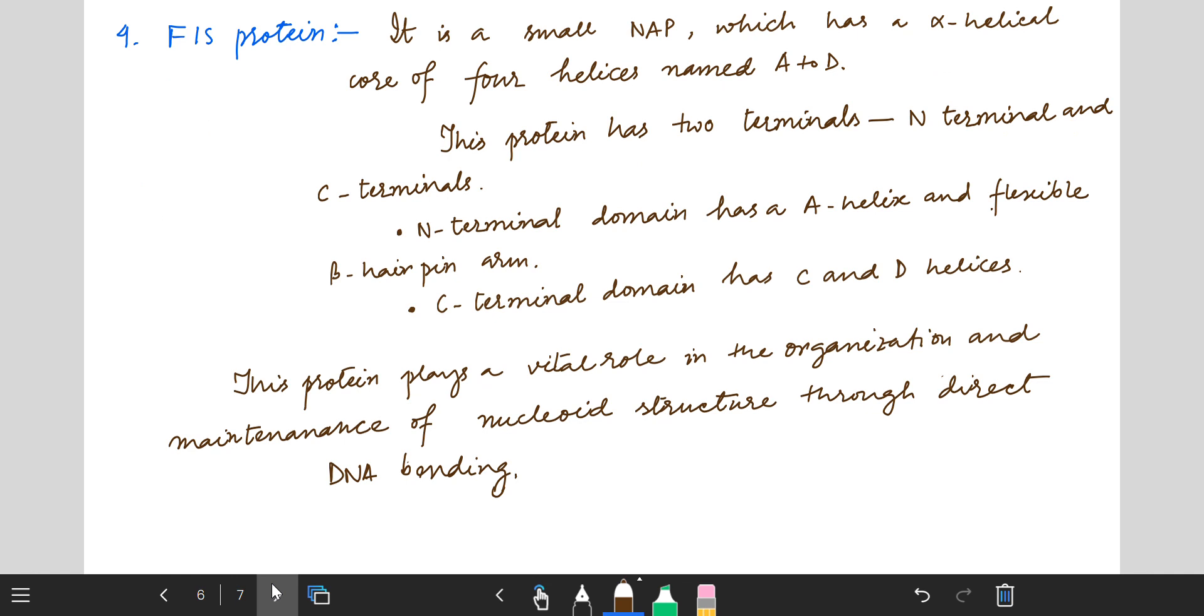The fourth protein is FIS protein. FIS stands for factor for inversion stimulation protein. It is a small NAP or nucleoid associated protein which has an alpha helical core of four helices named A to D.